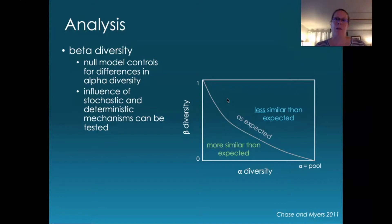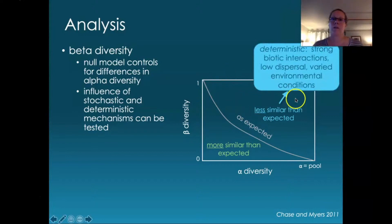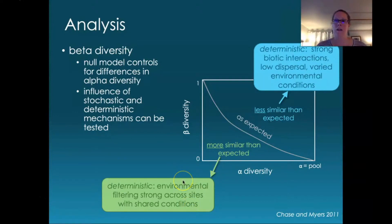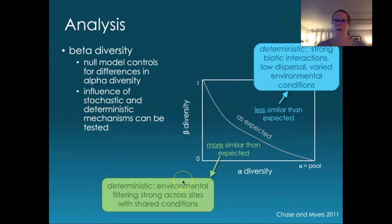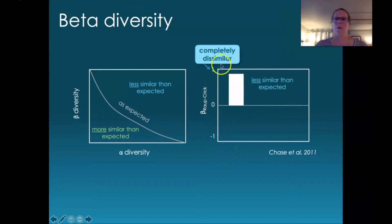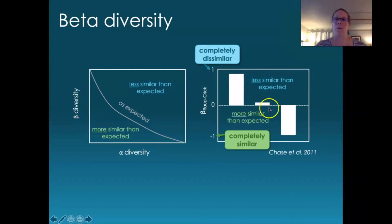We can assign mechanistic explanations to these. For communities less similar than expected, we predict strong biotic interactions and low dispersal, with variation in environmental conditions driving community differences. For more similar communities, we think environmental filtering is strong — the environment selects for a subset of species that can tolerate conditions. If communities fall near the null expectation line, we predict that dispersal is high and random events are having a big effect. Beta diversity is scaled between positive one and negative one: a value of one is completely dissimilar, negative one is completely similar, and around zero is our stochastic effect.